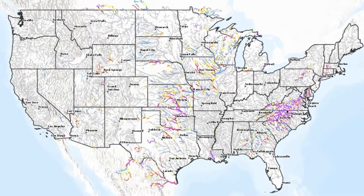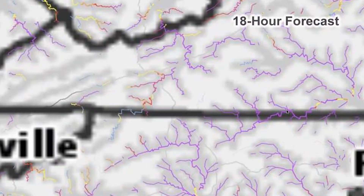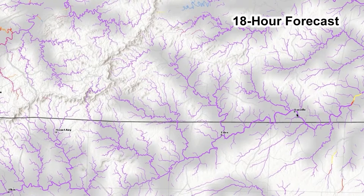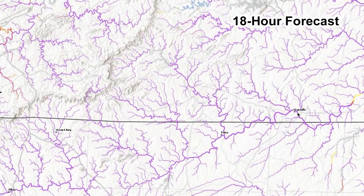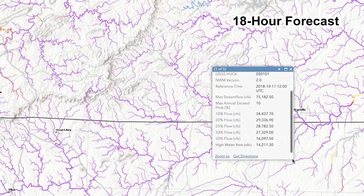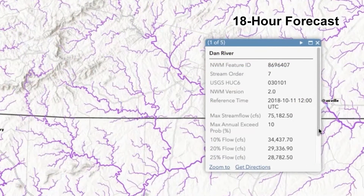The 18-hour version of this visualization uses the rainfall forecast from the HRRR and helps the forecaster narrow in on specific areas of vulnerability in the near term. Clicking a location reveals additional details about its expected conditions, including the maximum flow expected over the forecast period, its estimated high water flow value, and its AEP thresholds.